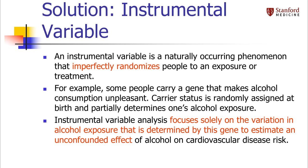An instrumental variable is a naturally occurring phenomenon that imperfectly randomizes people to an exposure or treatment. For example, some people carry a gene that causes facial flushing and other unpleasant symptoms when they drink, so they drink dramatically less alcohol than people who don't carry the gene. Carrier status can be viewed as a random event that partially determines one's alcohol exposure but is otherwise unrelated to heart disease. If we can isolate only the variation in alcohol consumption determined by this gene and relate that to heart disease risk, this will give us an unconfounded estimate of the effect of alcohol on heart disease.